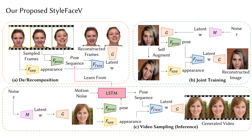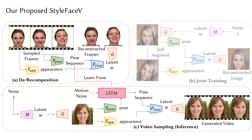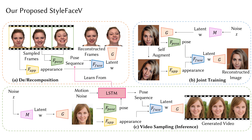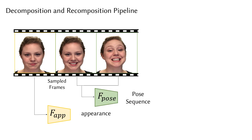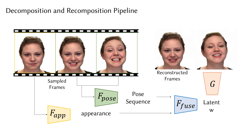Here is our whole framework. In the decomposition and recomposition pipeline, some frames are sampled from video training data. We extract appearance representations from the first selected frame and pose representations from the rest of the frames. Then we recompose both representations to get the intermediate embedding as the input of the synthesis network. Sampled frames are reconstructed according to their provided poses.